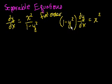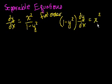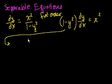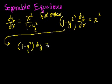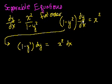Let's get back to solving this. The first step was multiplying both sides by 1 minus y squared, giving us: 1 minus y squared times dy/dx is equal to x squared. The real end goal is to separate the y's and x's and integrate both sides. Now I multiply both sides times dx, so I get: 1 minus y squared dy is equal to x squared dx. I have separated the x and y variables and the differentials.